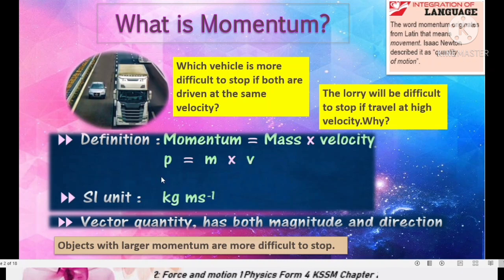Thus we get the formula P equals to mv. The SI unit for momentum is based on this formula. Unit for mass is kilogram. Unit for velocity is ms to the power negative 1. Thus SI unit for momentum equals to kilogram ms to the power negative 1.